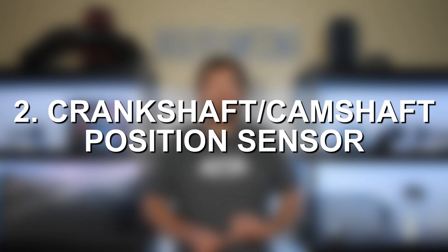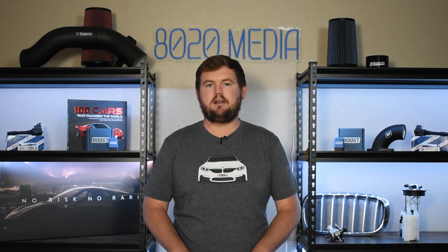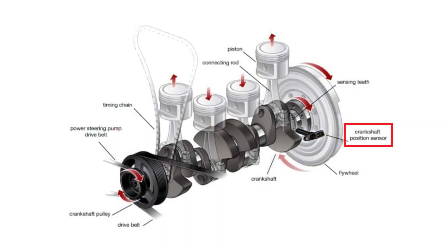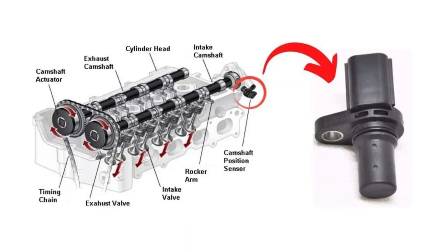Common cause number two is crankshaft or camshaft position sensors. As the name suggests, these sensors are responsible for monitoring the position of their respective components — the crankshaft position sensor measures the crankshaft, and the cam position sensor measures the camshafts. An issue with either one can cause fault code P0016, and these are among the most common causes since they're electrical parts prone to wearing down and failing over time.